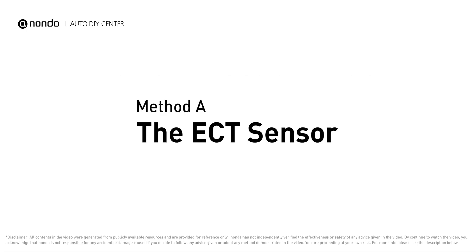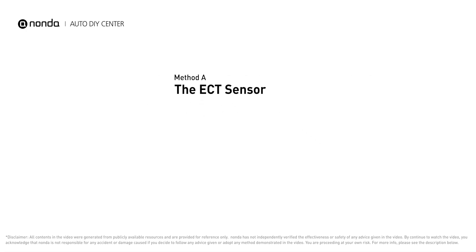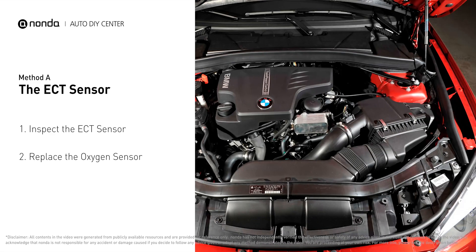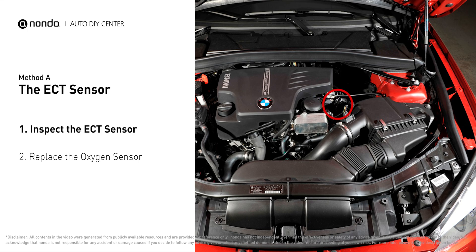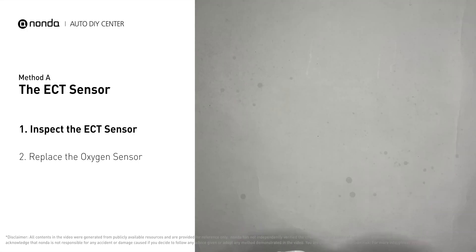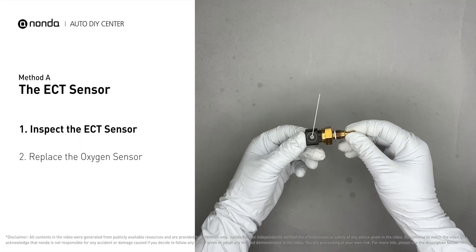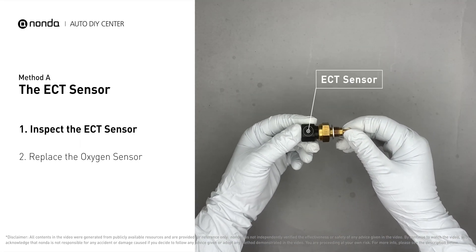Method A: the ECT sensor. In most cars, the primary ECT sensor is installed near the thermostat in the cylinder head. Remove the ECT sensor from the engine.